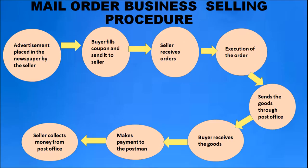In mail order business, the seller places an advertisement in a newspaper. The buyer fills in a coupon and sends it to the seller. The buyer then receives the goods and makes payment to the postman, after which the seller collects the money from the post office.